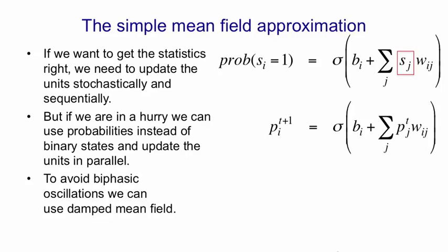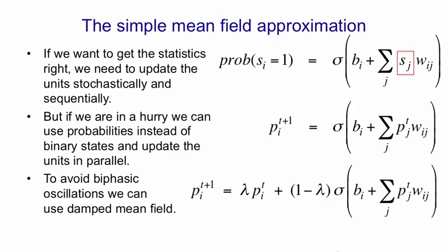It can go wrong by giving us biphasic oscillations, because now we're updating everything in parallel. We can normally deal with those by using what's called damped mean field, where we compute pi(t+1) but don't go all the way there. We go to a point in between where we are now and where the update wants us to go — specifically, lambda times the current value plus (1 - lambda) times the update target — and that will kill oscillations.